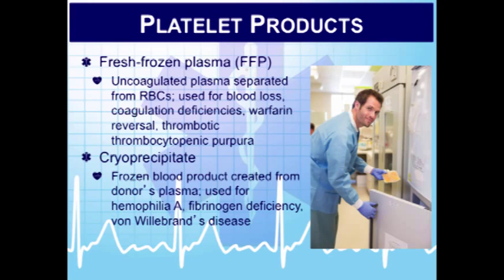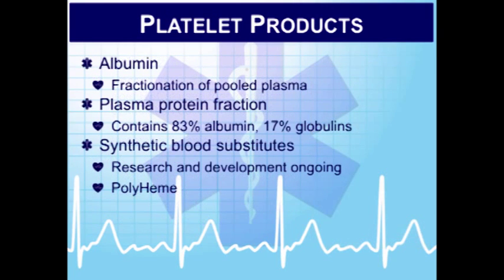Cryoprecipitate is a frozen blood product taken from plasma. It's given to patients with hemophilia, fibrinogen deficiency, von Willebrand's disease, or factor 13 deficiency, because cryoprecipitate contains these specific clotting factors.